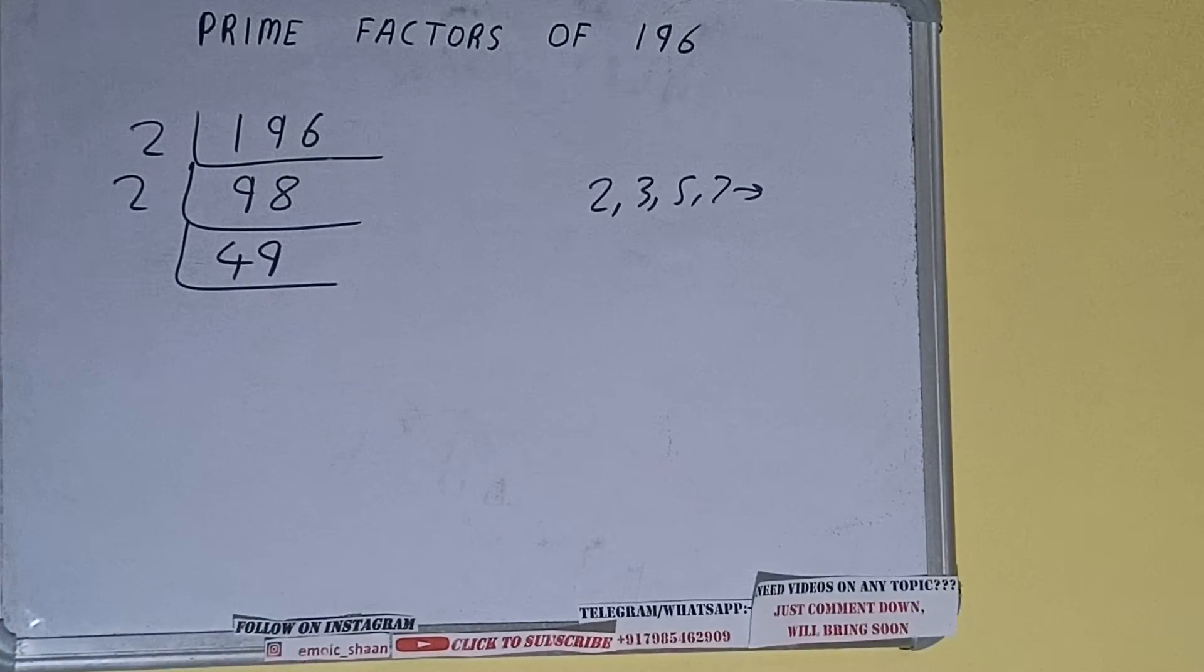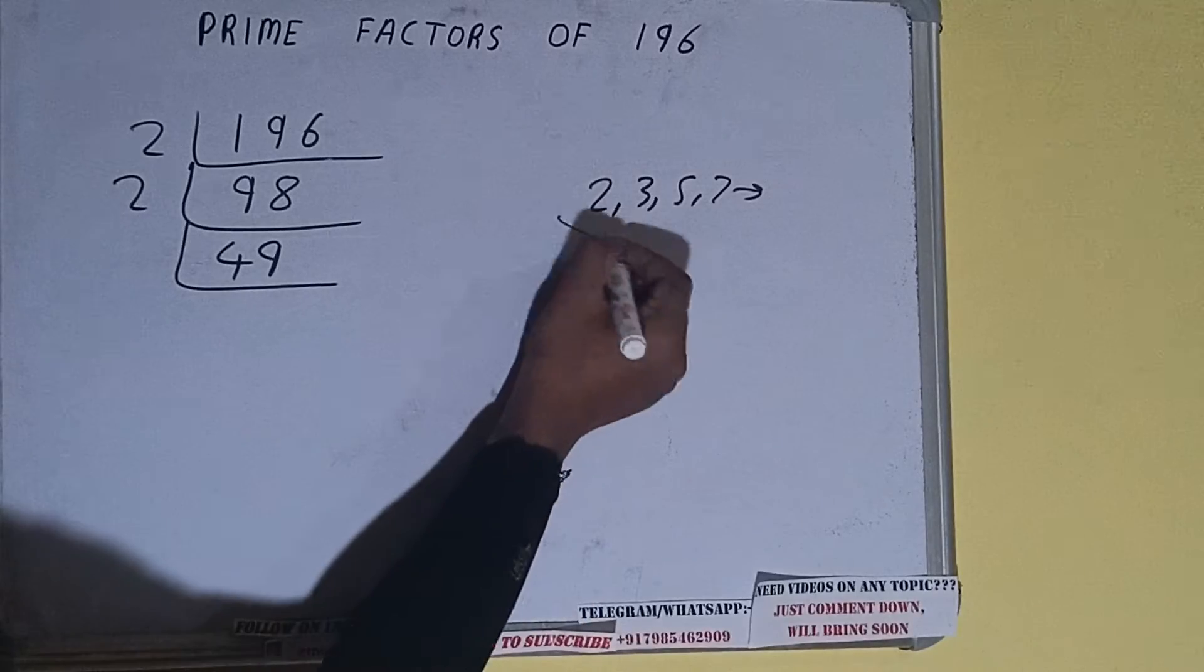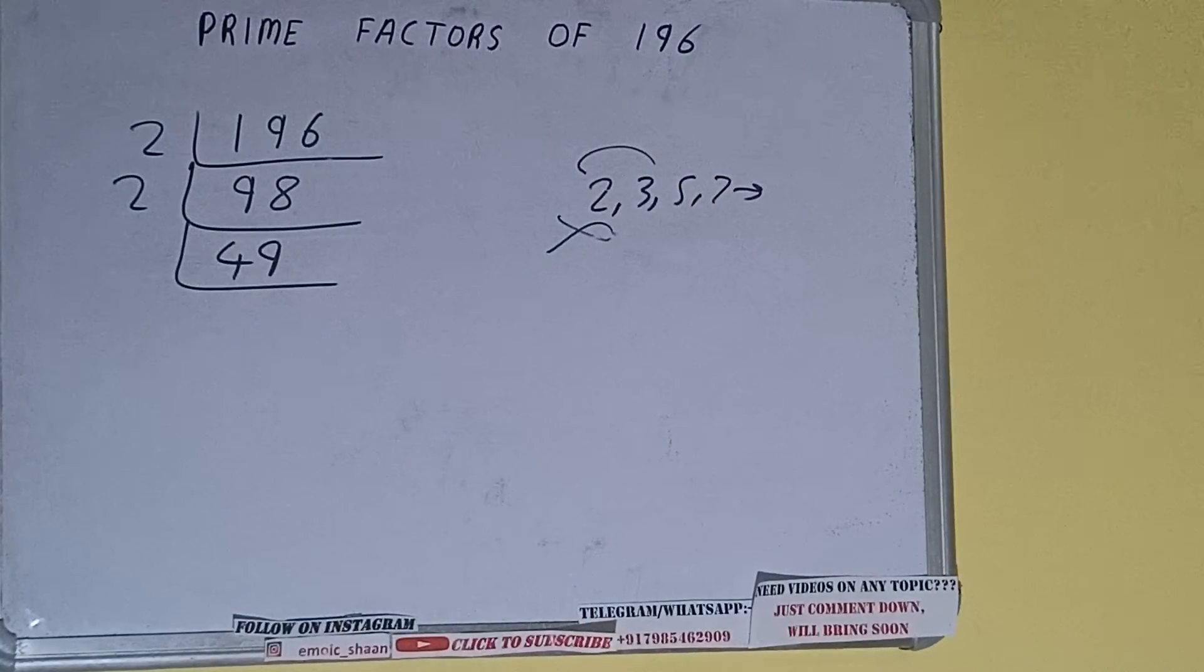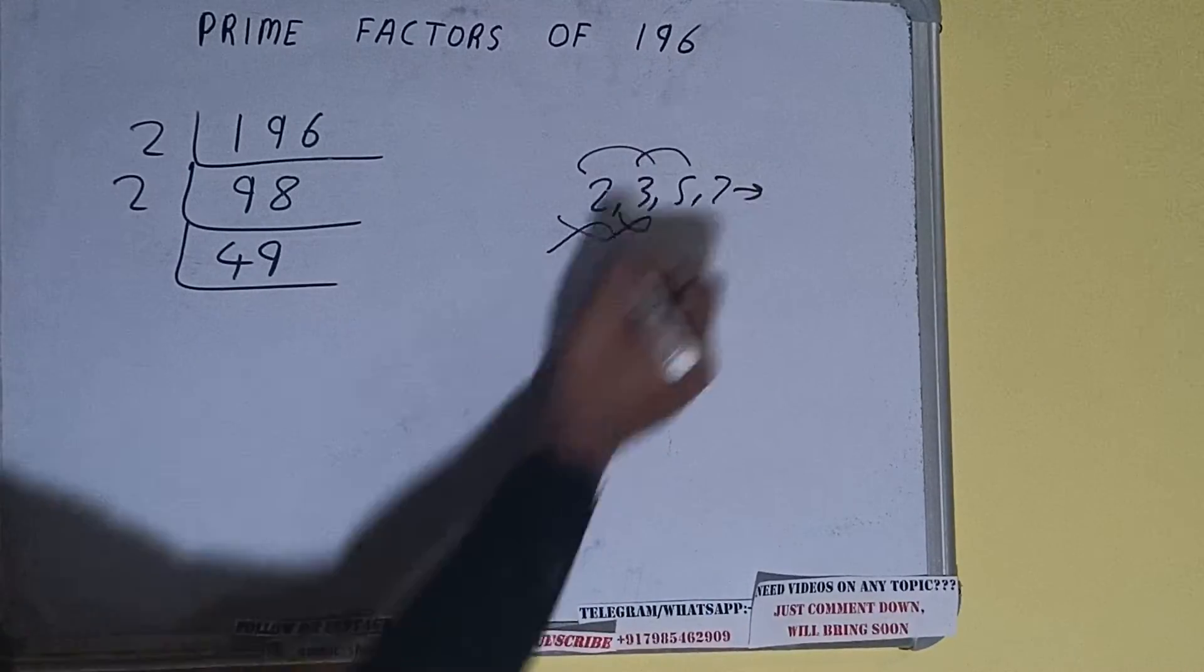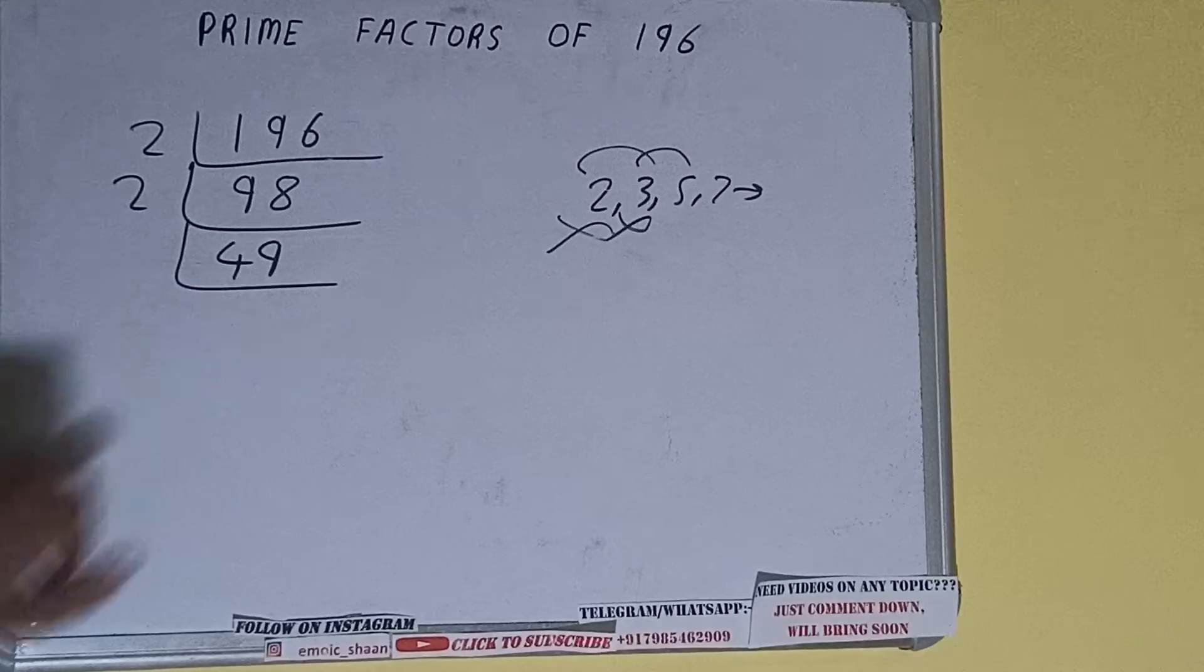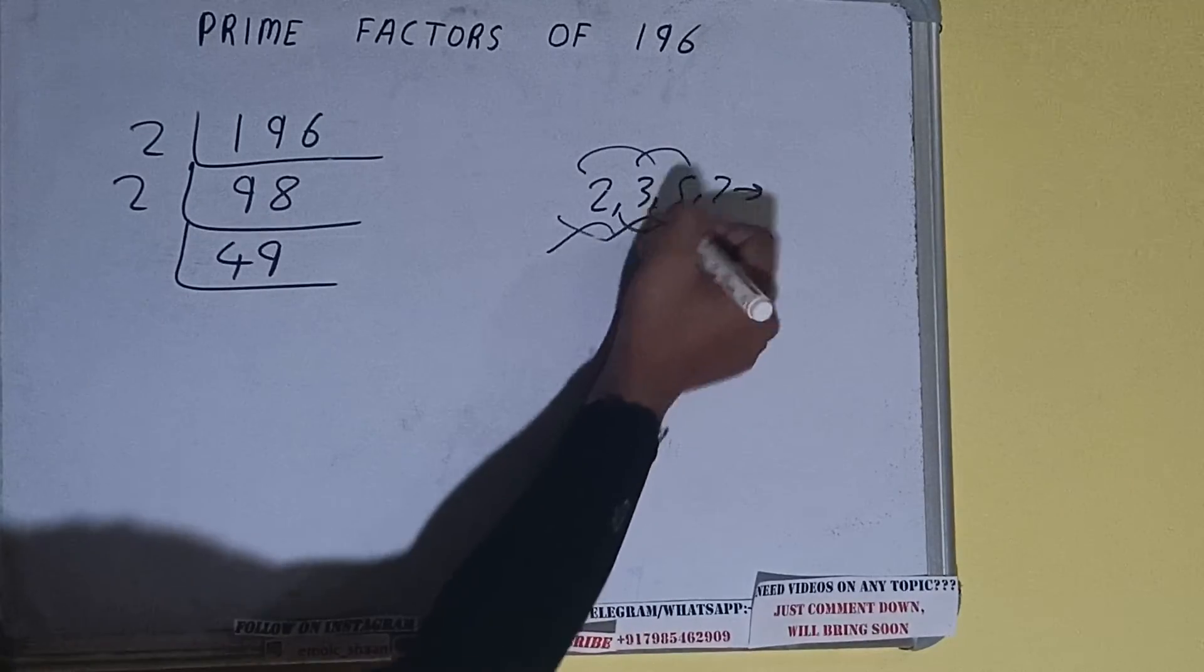49 is not divisible by two because it is an odd number, so we'll check with the next lowest prime number, that is three. Is 49 divisible by three? Let's check: three plus nine... it is not divisible by three. Let's check with five. The last digit is neither five nor zero, so it is not divisible by five also.